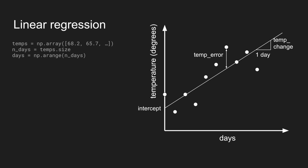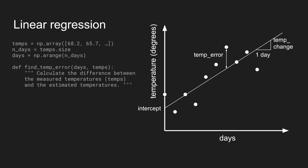Once you have that line, there is a deviation. Each measured data point won't lie exactly on that line, but will be off by just a little bit. So we'll just call this the temperature error. If we write a little function to calculate the temperature error, it would look something like this.